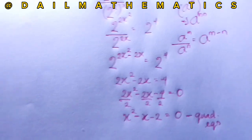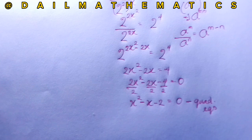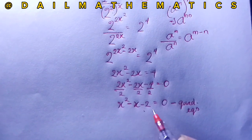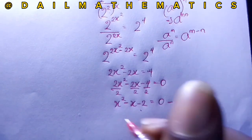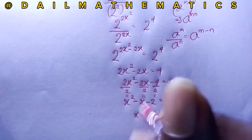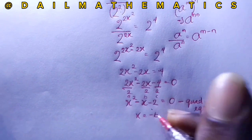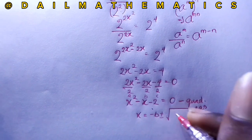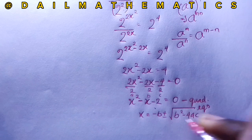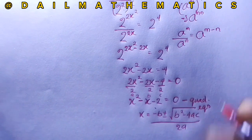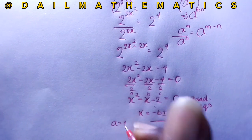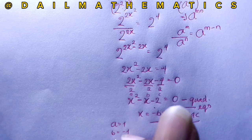We have the quadratic equation x squared minus x minus 2 equals 0. We will use the quadratic formula: x equals minus b plus or minus square root of b squared minus 4ac, all over 2a.